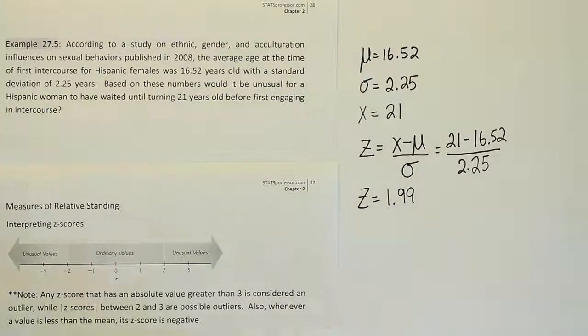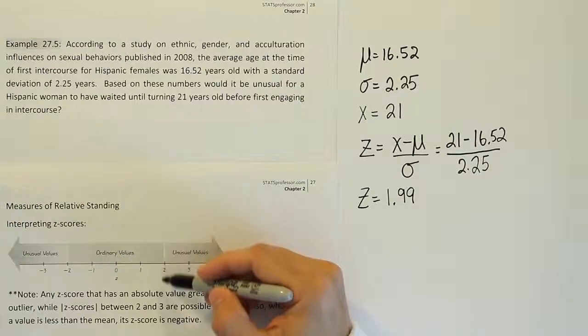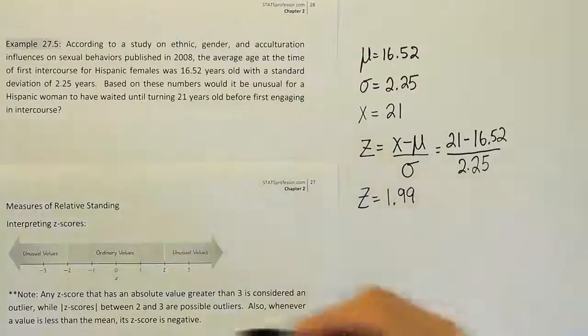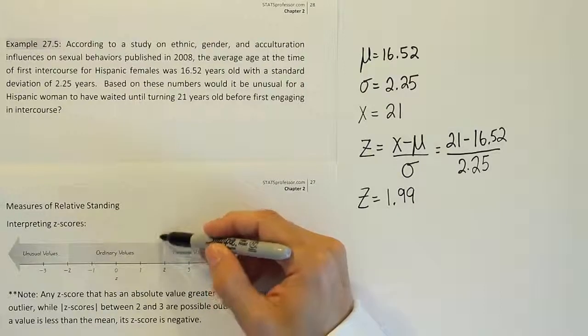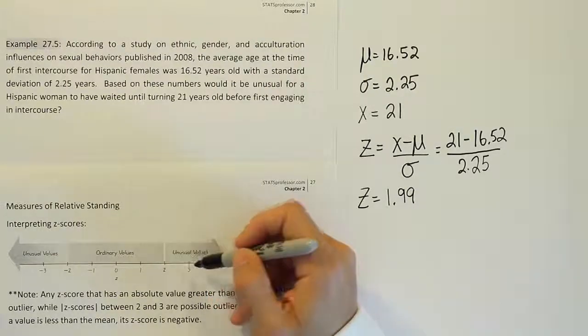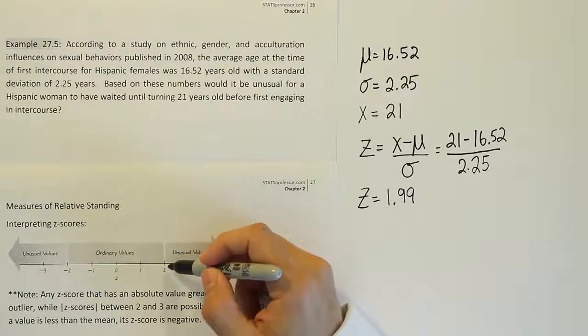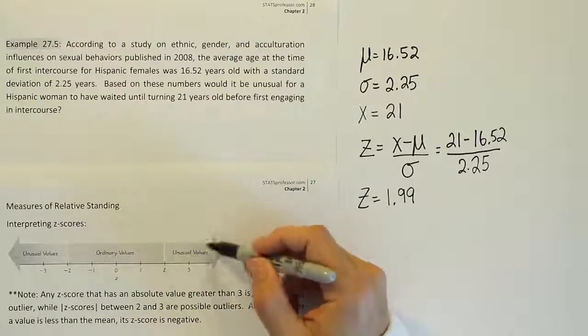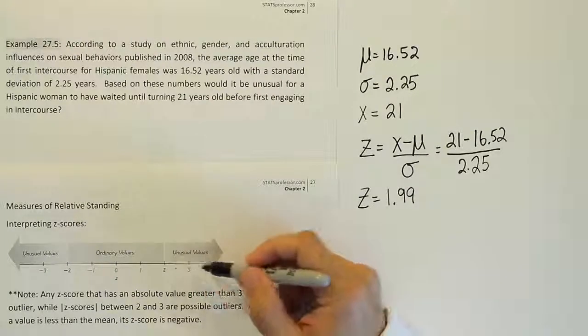So it is right on the cusp of being unusual. 1.99 on this scale is just before the 2 where we start to call things unusual. Now the scale progressively gets darker. If you saw it in color like it is in the notes, it gets progressively darker, which means that the further you get out here, the more unusual something is.